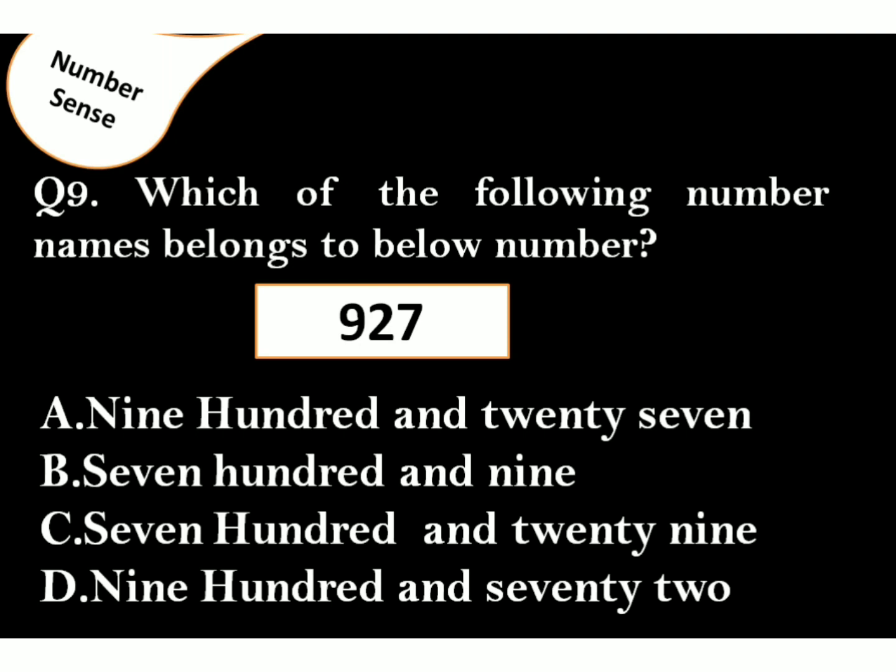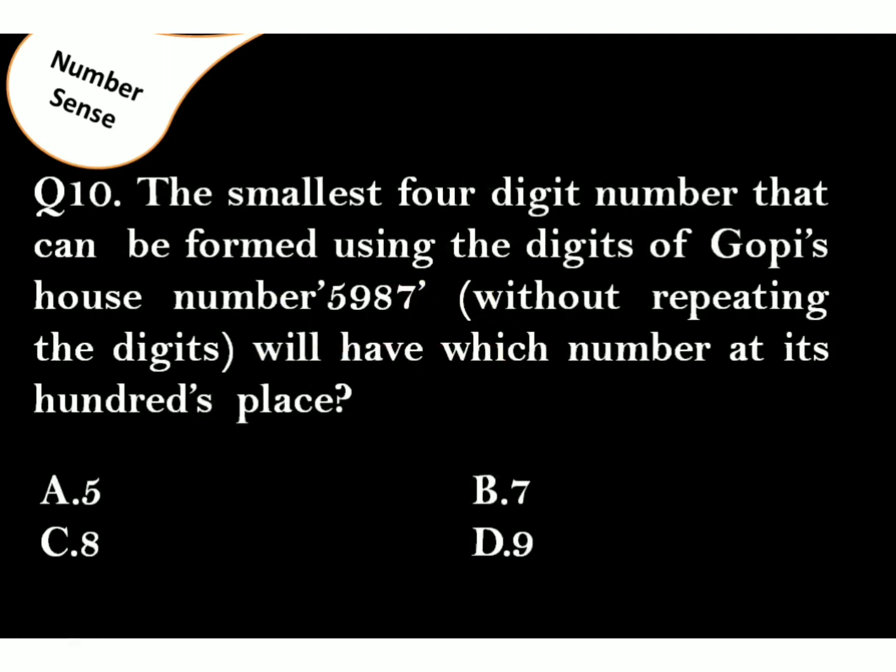Which of the following names belongs to the below number? The correct answer is Option A. Question 10. The smallest 4-digit number that can be found using the digits of Gopi's house number 5987 without repeating the digit will have which number at its 100's place?